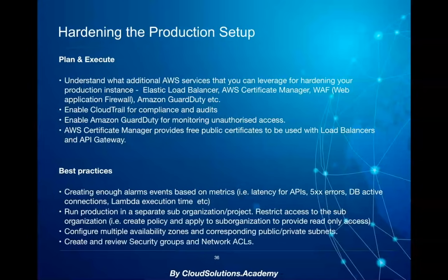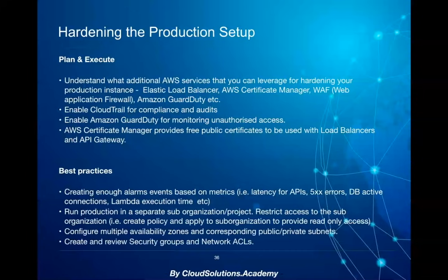In terms of continuous monitoring, review users and roles, firewall and security configurations allocated to the production environment from time to time, and check the insights from services like AWS GuardDuty — check for unauthorized access and block the required IP addresses. It is also recommended to keep all AWS resources in a private subnet and use a bastion host to connect to your internal and private AWS infrastructure.